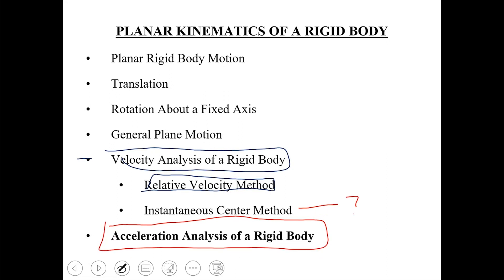We will do the instantaneous center method on the side because of shortage of time. Probably if we have time next week, we will see this method a little bit. Otherwise, you can do at least one method for velocity analysis. This is basically the vector method — the relative velocity method. The instantaneous center method is a scalar method, which you will also study in the mechanics of machines course.